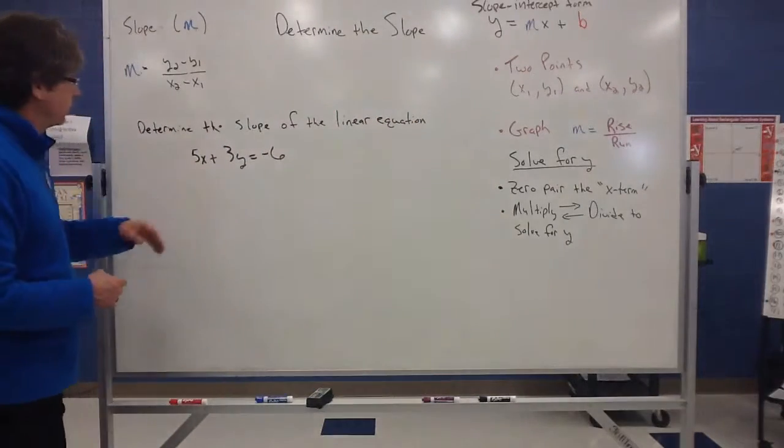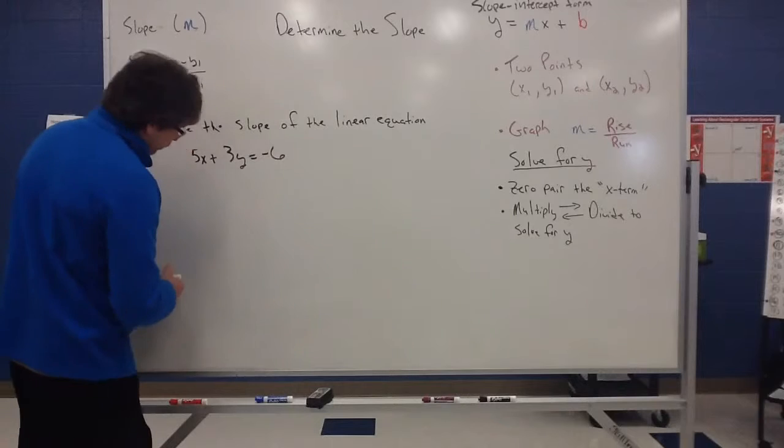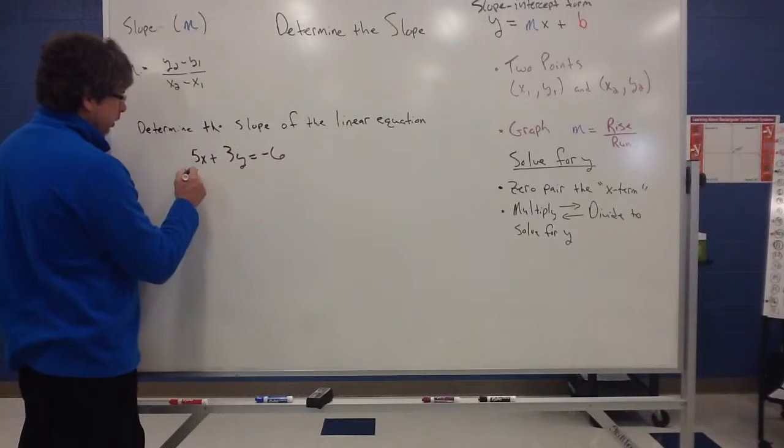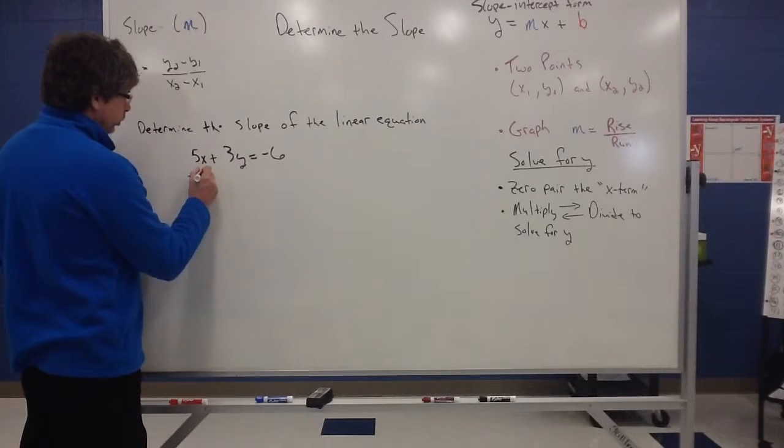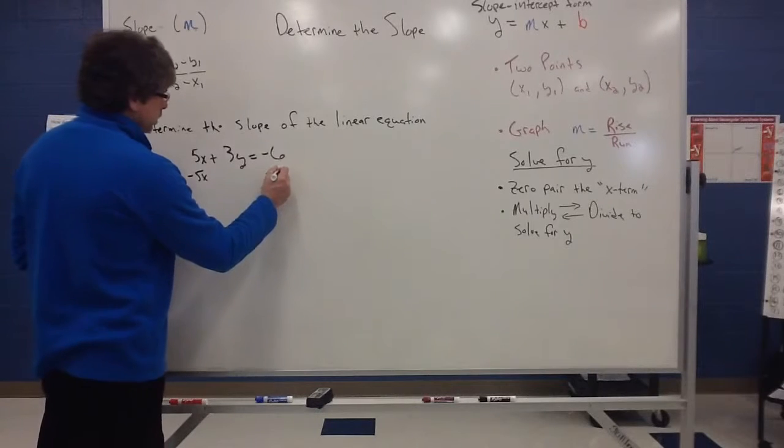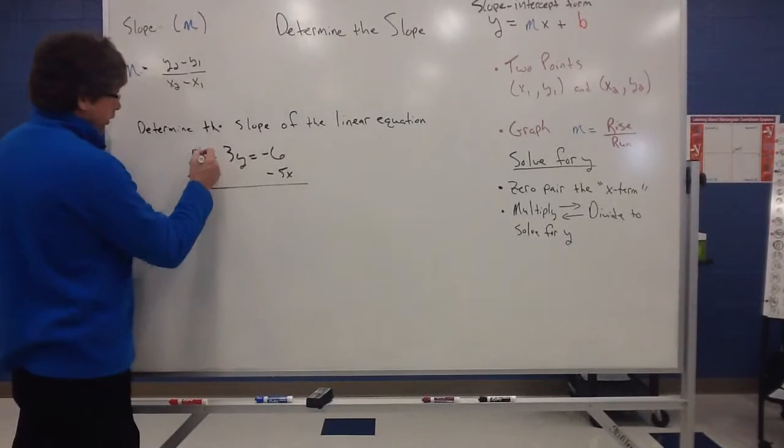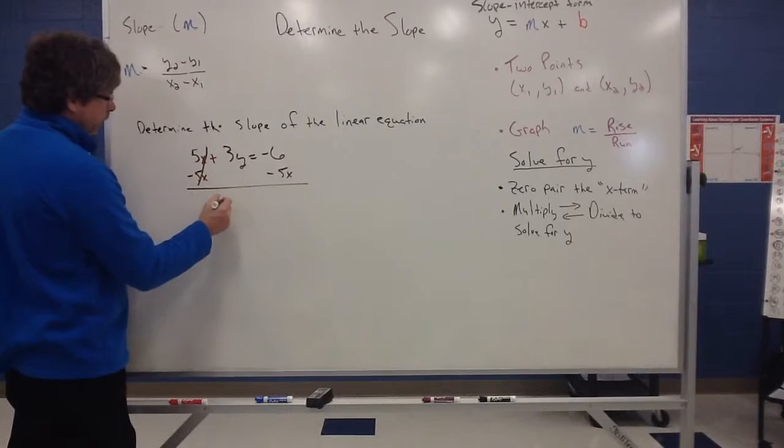So when it looks like this, our first maneuver is to go after this x term. Since it's a 5x, we use its zero pair, which is a negative 5x. We put that on each side. And the 5x and the negative 5x zero out.